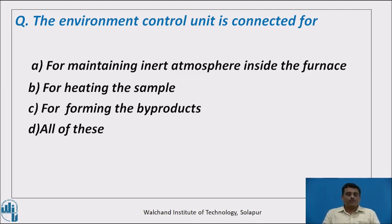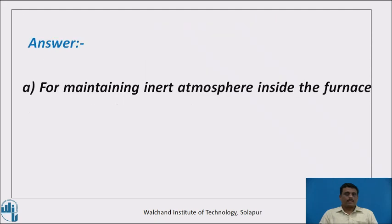Here is a question: the environment control unit is connected for — option A: maintaining inert atmosphere inside the furnace; option B: heating the sample; option C: forming by-products; option D: all of these. The correct answer is option A — the environment control equipment is provided for maintaining an inert atmosphere inside the furnace to avoid chemical reactivity of the sample with the atmosphere.